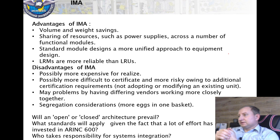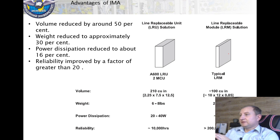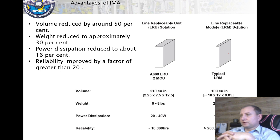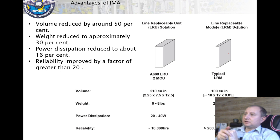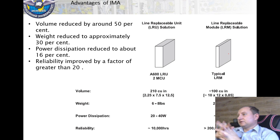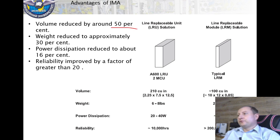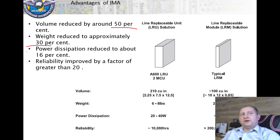Comparing LRU and LRM — where LRU is a unit and LRM is part of an integrated rack — and comparing ARINC 600 for MCU with ARINC 900 for LRM, we can see that we can reduce weight by approximately half, reduce size by approximately 30%, reduce power consumption by 16%, and improve reliability by 20%. That's why IMA is incredible and is the future of onboard electronic equipment.